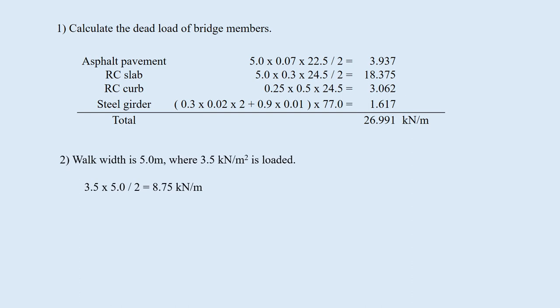2. The live load is obtained, multiply the walking area by the pedestrian load of 3.5. 3. The girder is subjected to fully distributed load. The bending moment due to the dead load MD and that due to the live load ML at the mid-span can be calculated like this.